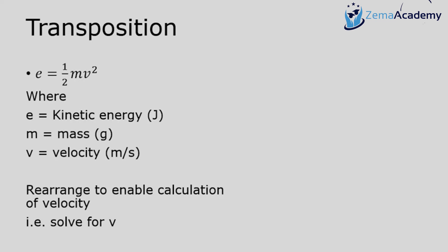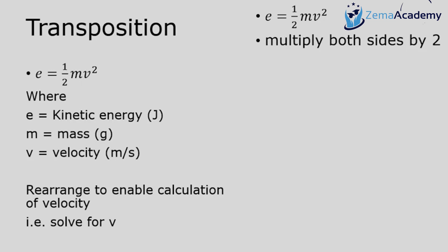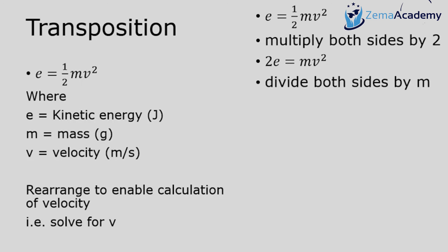Here's an example from physics: kinetic energy, where E equals half mv squared, with E in joules, m as mass in grams, and v as velocity in metres per second. To solve for v, I start by multiplying both sides by 2 to eliminate the half, giving 2E equals mv squared. Then I divide both sides by m, since I want v isolated.